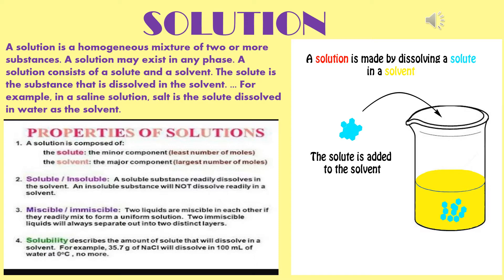Properties of solutions: A solution is composed of the solute — the minor component, the least number of moles — and the solvent, the major component with the largest number of moles. A soluble substance readily dissolves in the solvent. An insoluble substance will not dissolve readily in a solvent. Two liquids are miscible if they readily mix to form a uniform solution. Two immiscible liquids will always separate out into two distinct layers.